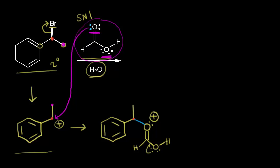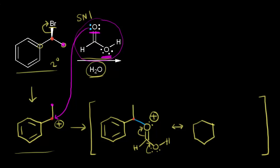This product is resonance stabilized. We can move in a lone pair of electrons and push these electrons off onto our oxygen. Showing that resonance structure: we have our benzene ring, a bond to the top oxygen with its lone pair, a single bond to the carbon with the hydrogen, and a double bond to the right oxygen. The electrons in magenta formed a new double bond, and the electrons in red came off onto the right oxygen, giving it a plus one formal charge. So the product of nucleophilic attack by the carbonyl oxygen is resonance stabilized.